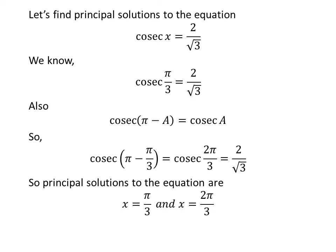So the principal solutions to the equation cosecant of x equals 2 upon square root of 3 are π upon 3 and 2π upon 3.